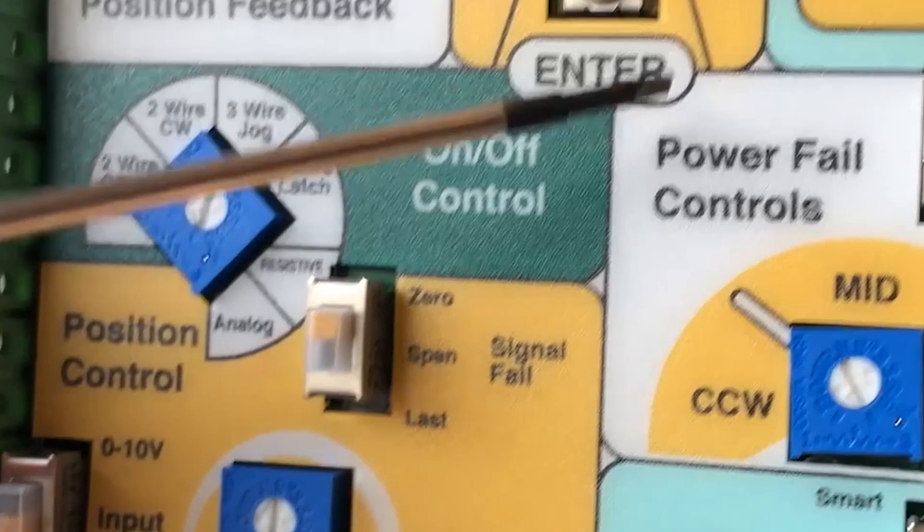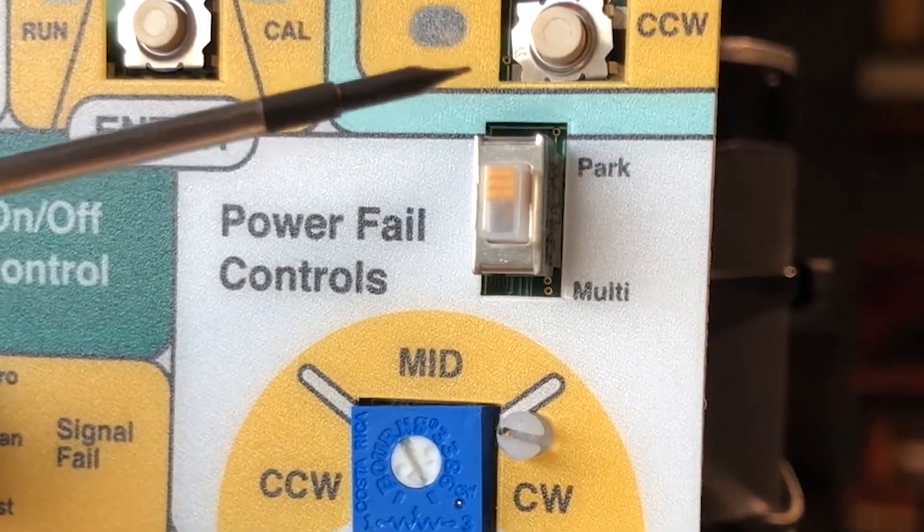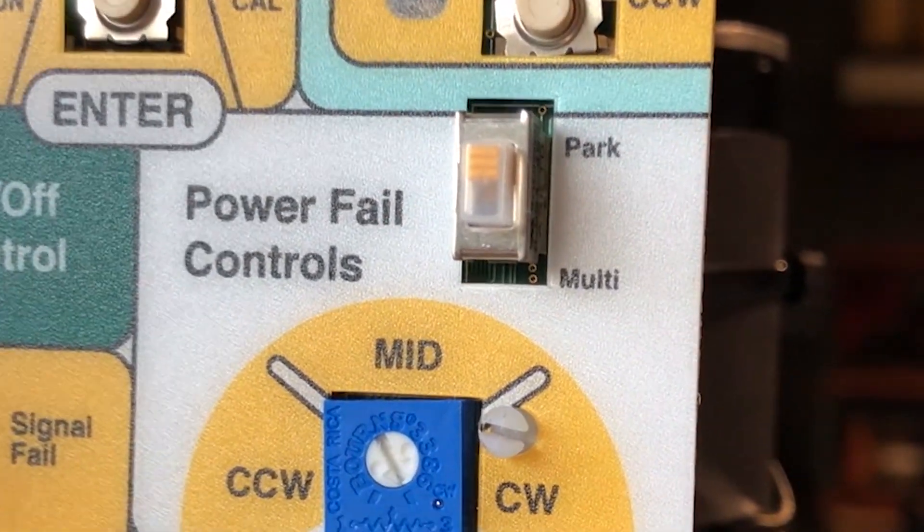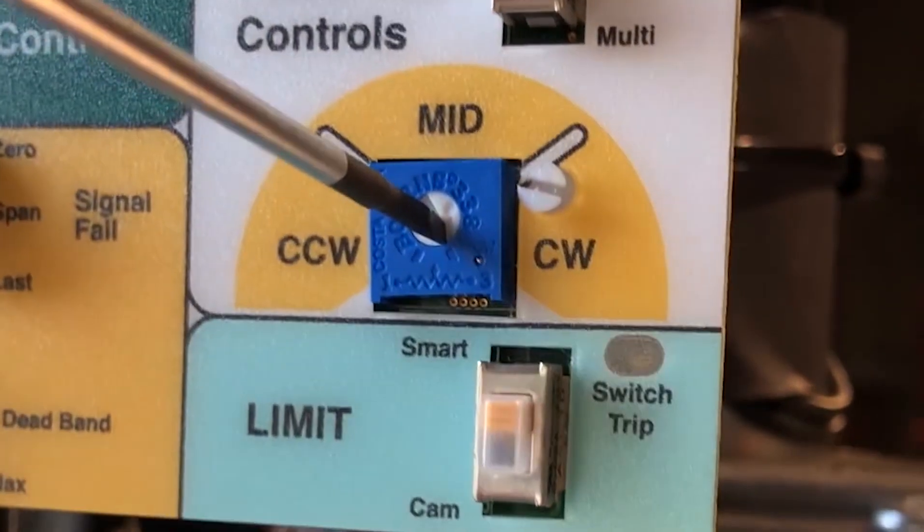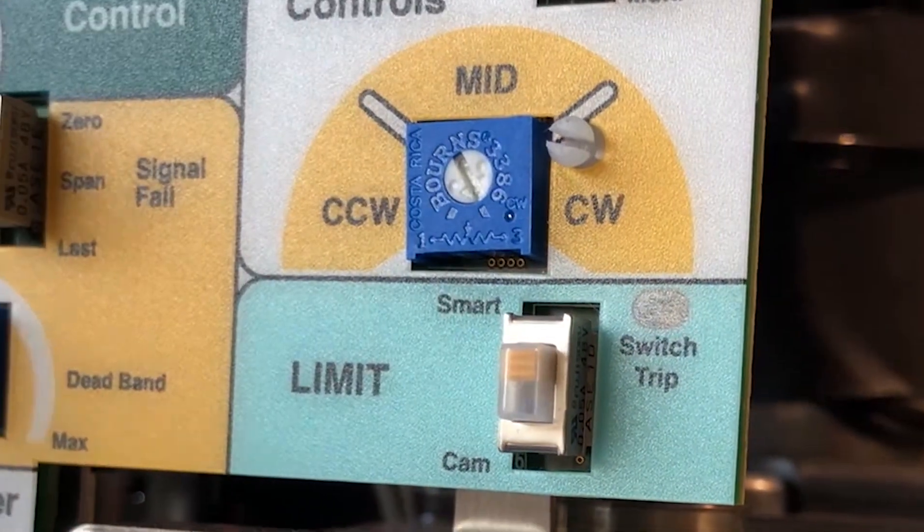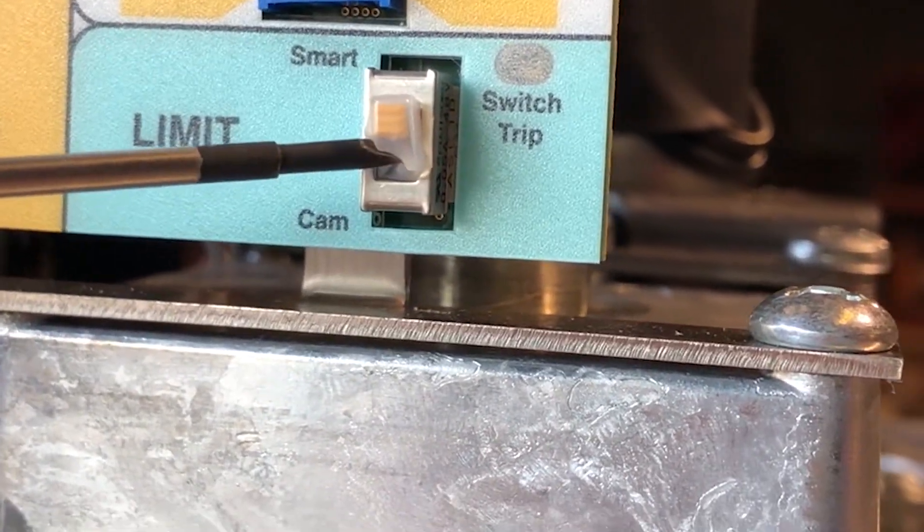Coming over here to your power fail controls. This is where you want your valve to end up if a loss of power. Go to the park position and in this demonstration I'm going to park it in the counterclockwise position which is in the closed position. Limit you want to be in the smart position.